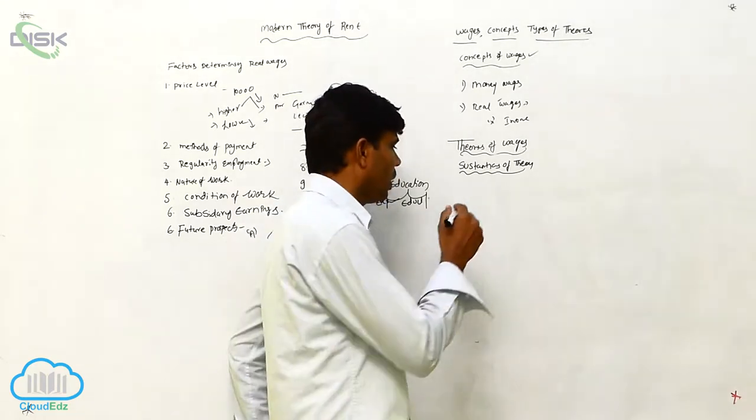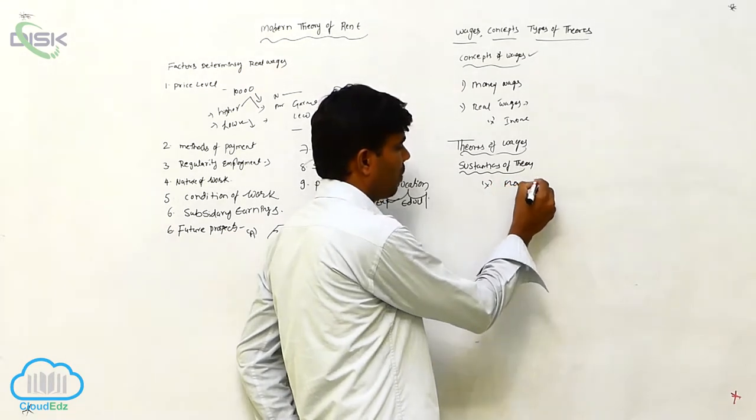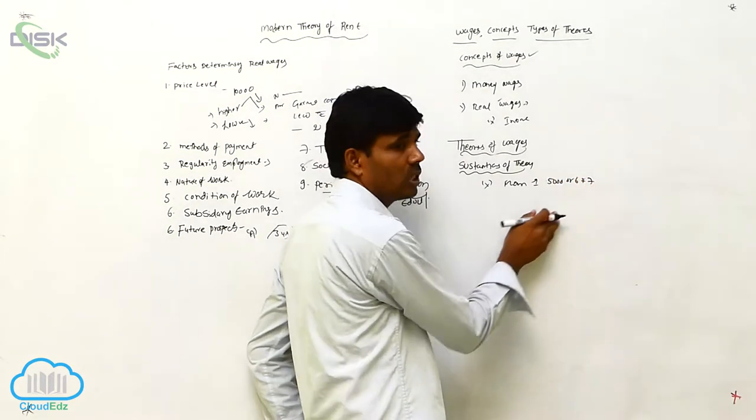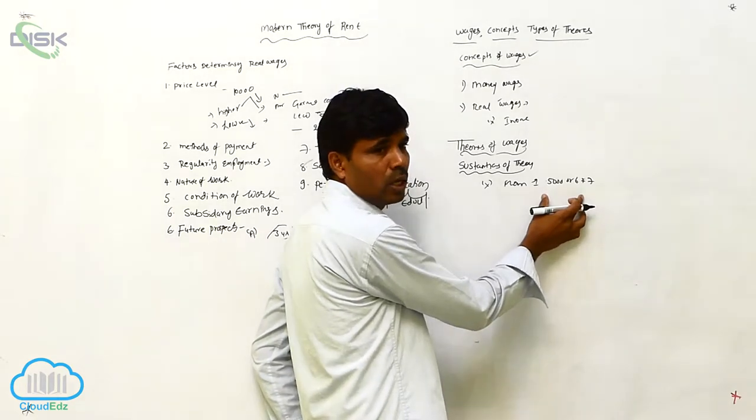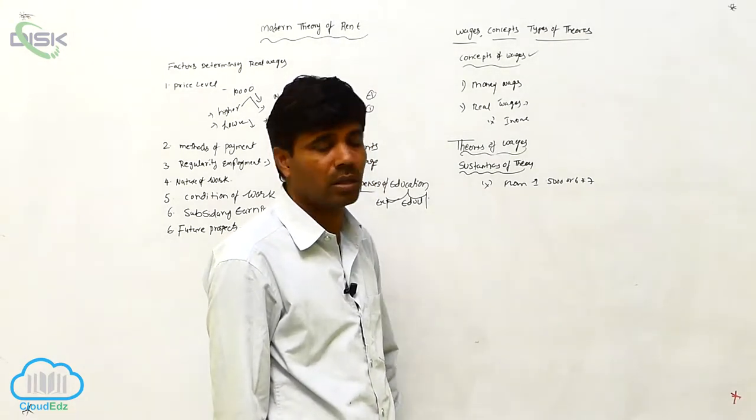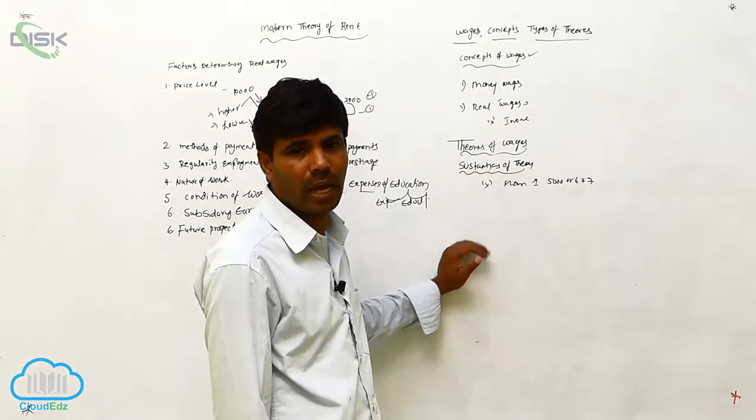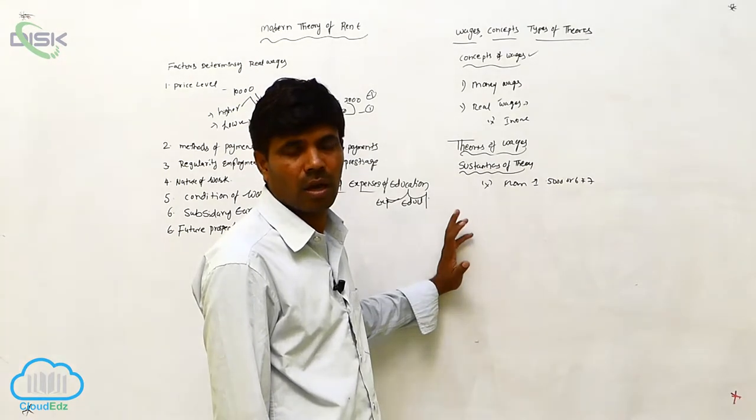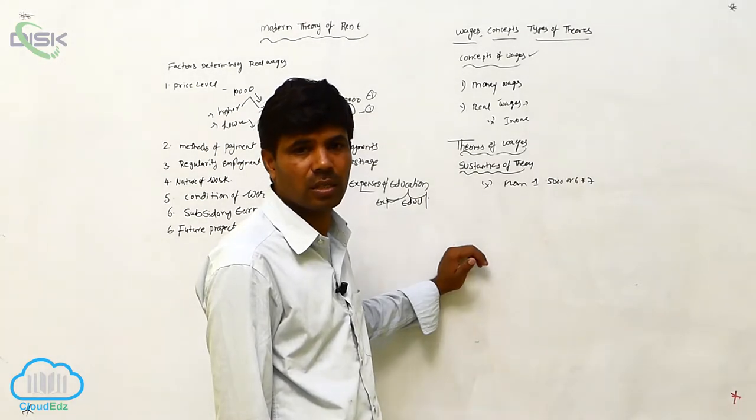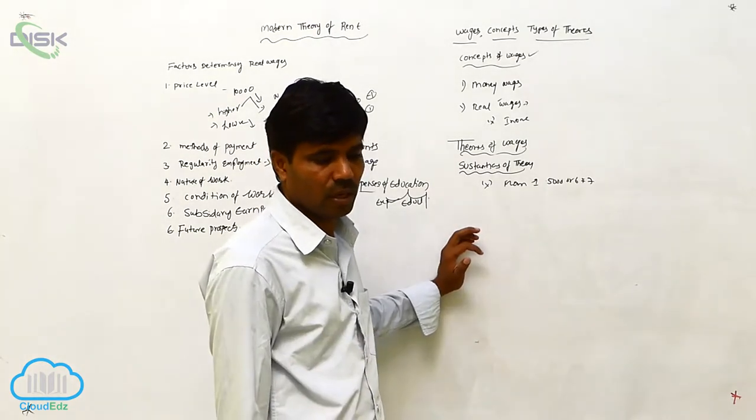For example, if X receives salary wages from A of 5,000, 6,000, or 7,000, whatever it may be, the particular wages should be sufficient for the fulfillment of family needs. That is the substance of the theory.